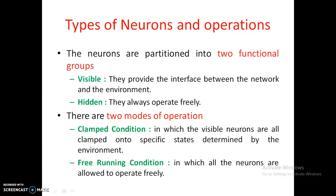The neurons in a Boltzmann machine are categorized into two functional groups: visible and hidden. Visible neurons provide the interface between the network and the environment — they correspond to input and output neurons. Hidden neurons, on the other hand, always operate freely.